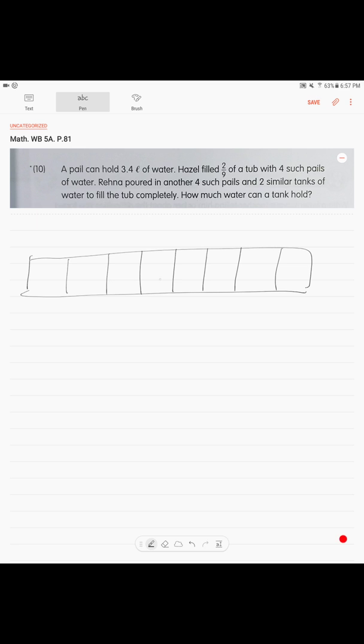1, 2, 3, 4, 5, 6, 7, 8, and 9. So, 2/9, 2/9 of a tub, of the whole tub can be filled with 4 pails.